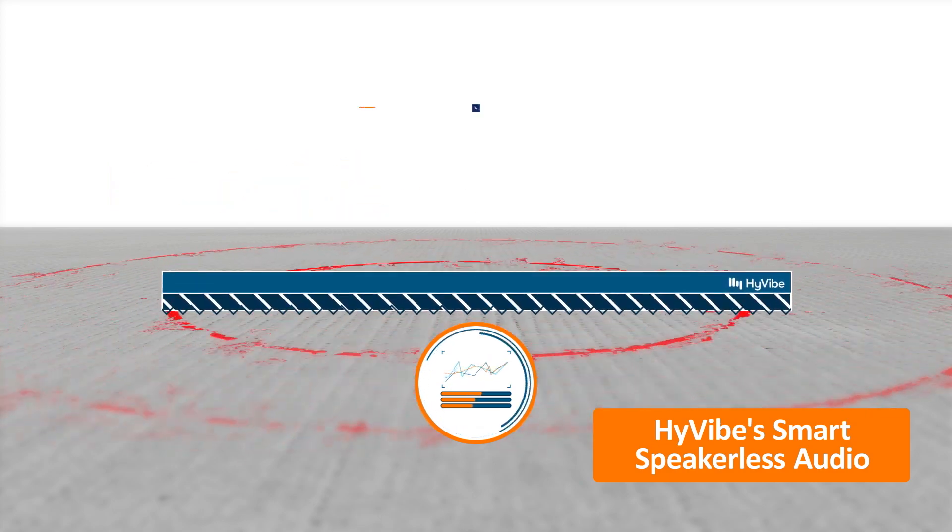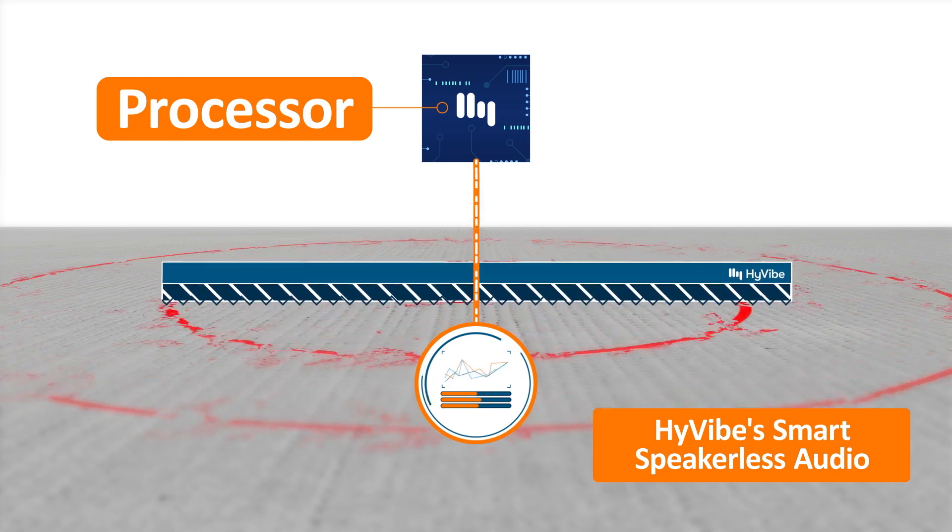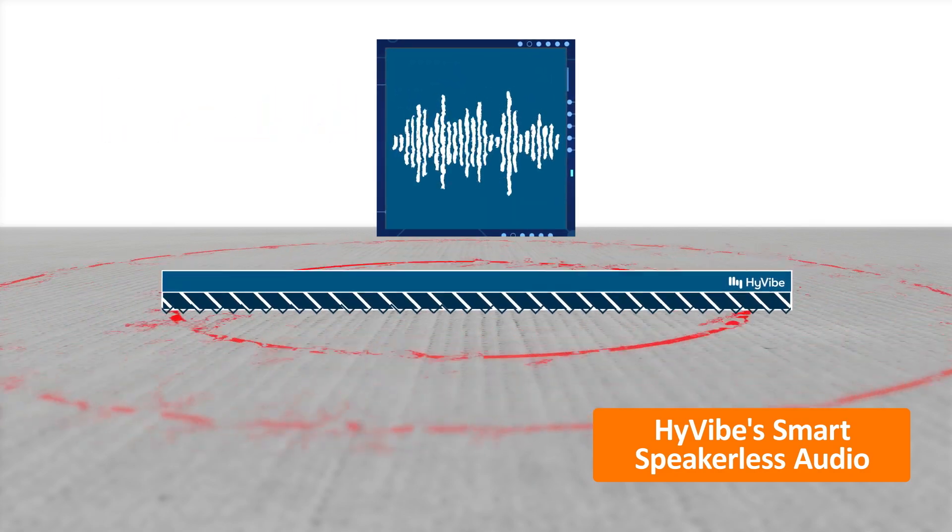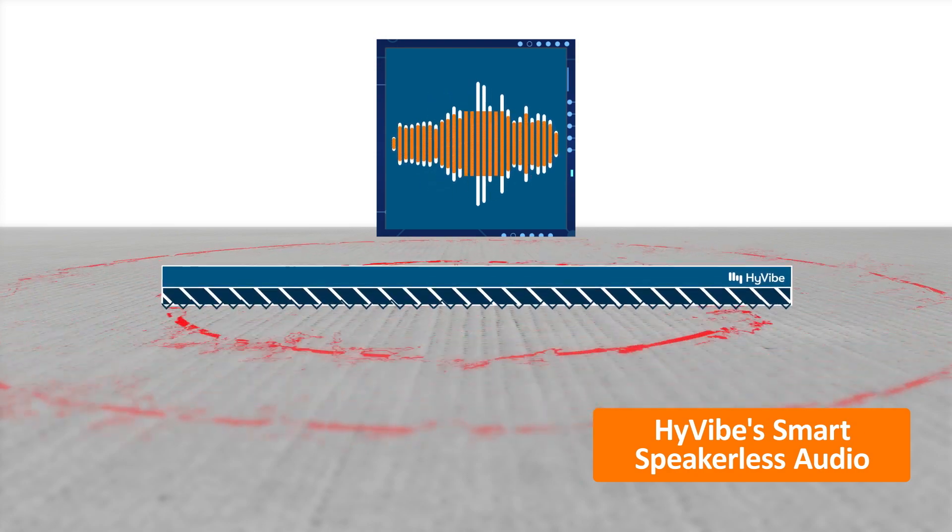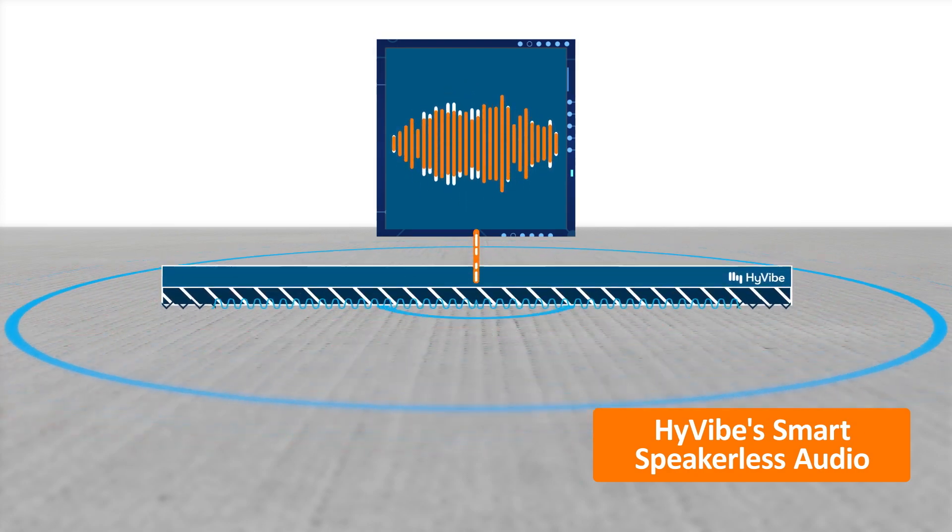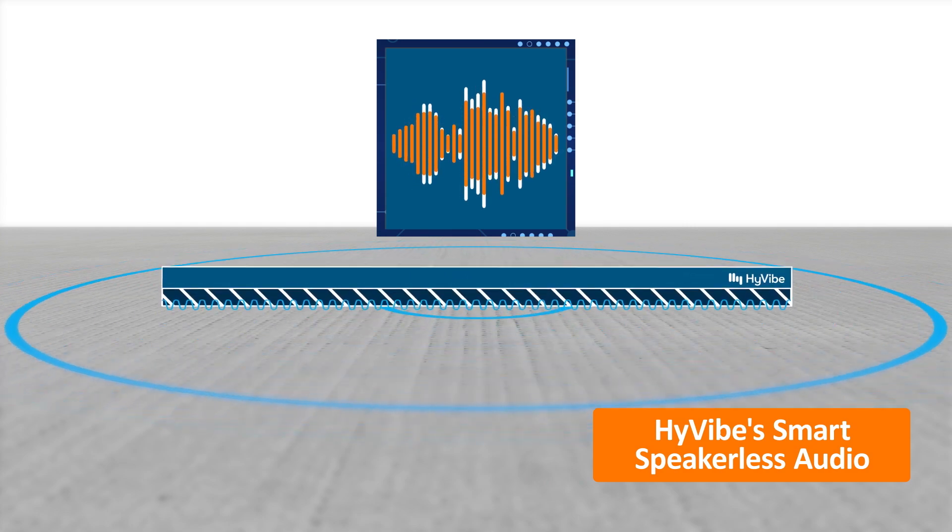We send this information to our high-speed connected processor, which analyzes and modifies the signal. The modified signal is added to the source to create an enhanced signal, and then sent to the actuators to excite the surface again.